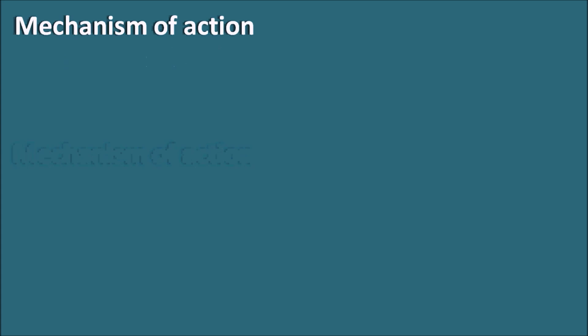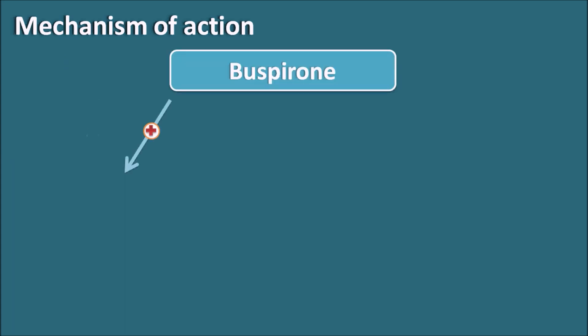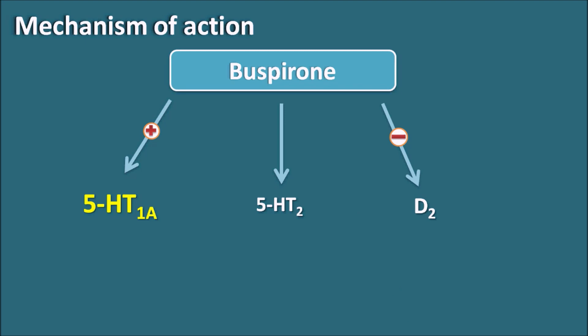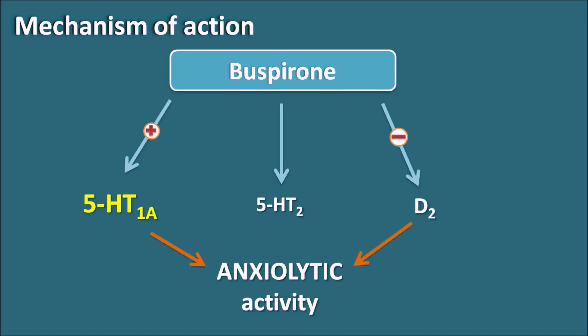Now let us see how buspirone acts. Buspirone acts as an agonist on the 5-HT1A receptors. These are pre-synaptic receptors which are auto-inhibitory in nature. A few 5-HT1A receptors are also present post-synaptically, but the majority are pre-synaptic, and they inhibit the release of 5-HT. Buspirone is also having some affinity towards the 5-HT2 receptors, which is why it is sometimes called a partial agonist. Buspirone can also act as an antagonist on the D2 receptors. The main anxiolytic activity of buspirone is attributed to both the 5-HT1A receptors and the D2 receptors.